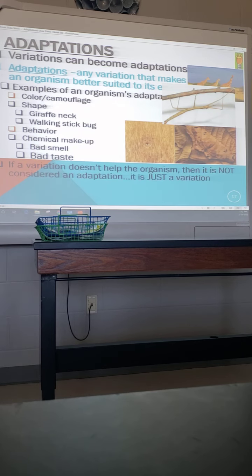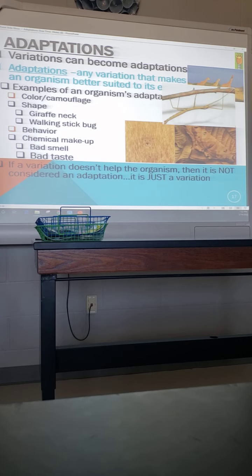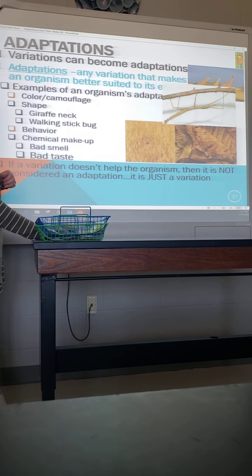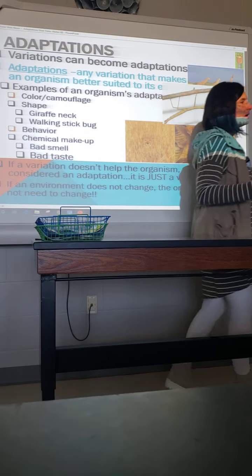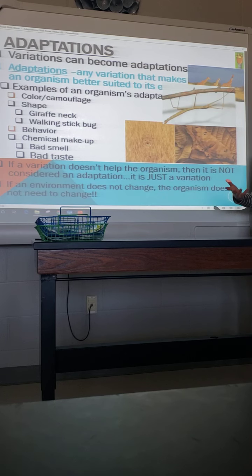If a variation does not help an organism survive, it's just a regular variation — just a difference. But if it is helpful, it changes category and becomes an adaptation. If the environment doesn't change, an organism doesn't need to change either — Uncle Scar's dark fur was never an advantage or an adaptation until the environment changed. If the environment never changed, that brown fur would stay just a regular variation, not really hurting him but not really helping him either.